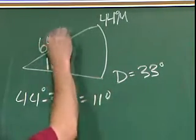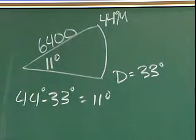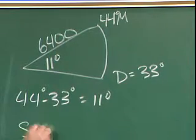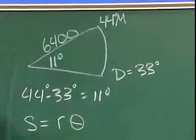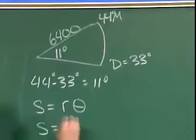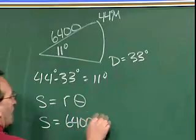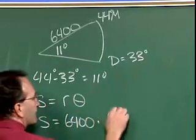We know the radius of the earth is 6,400 kilometers. We use the formula S equals R times theta. So S equals R, 6,400 kilometers. Theta is 11 degrees,